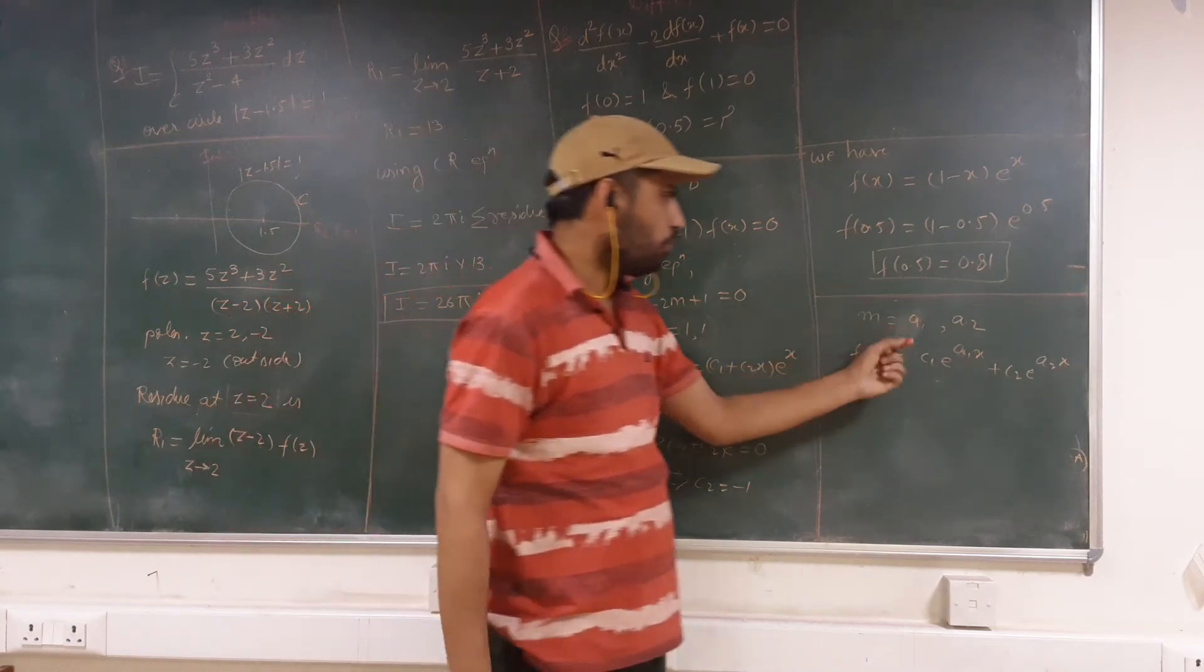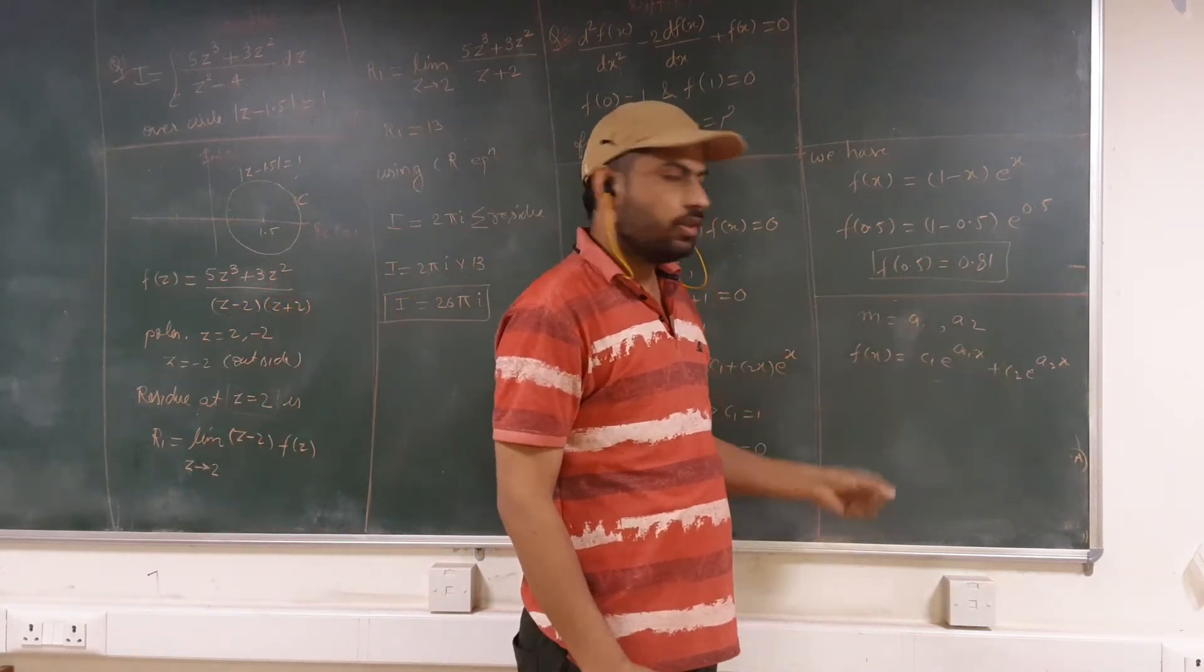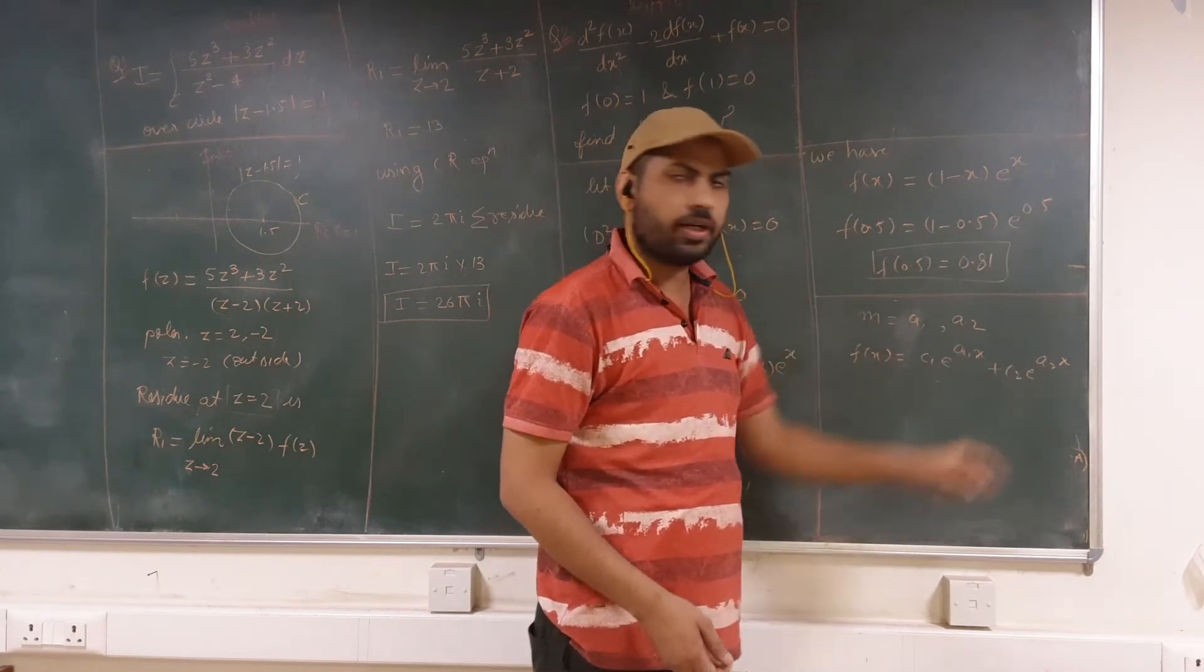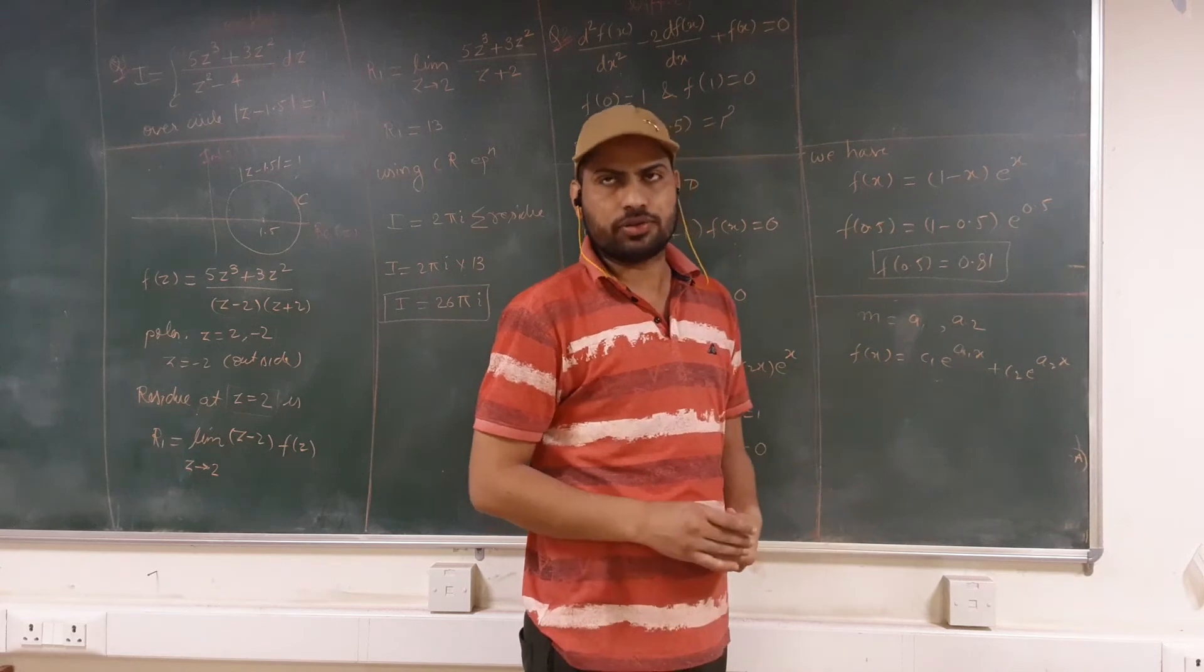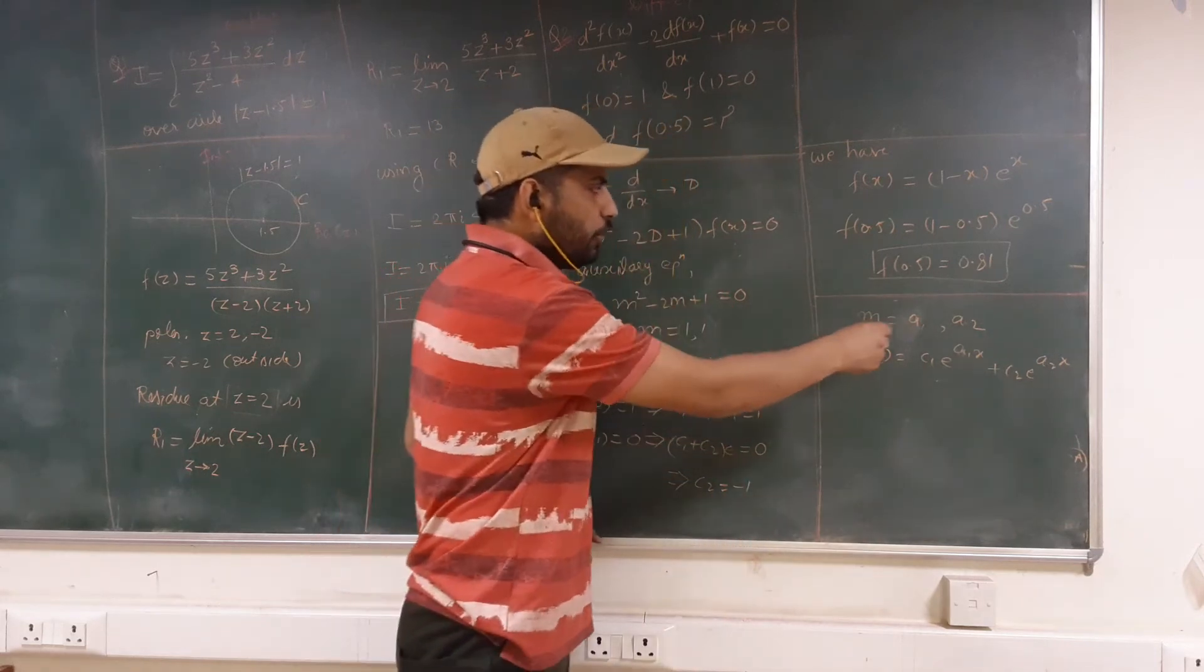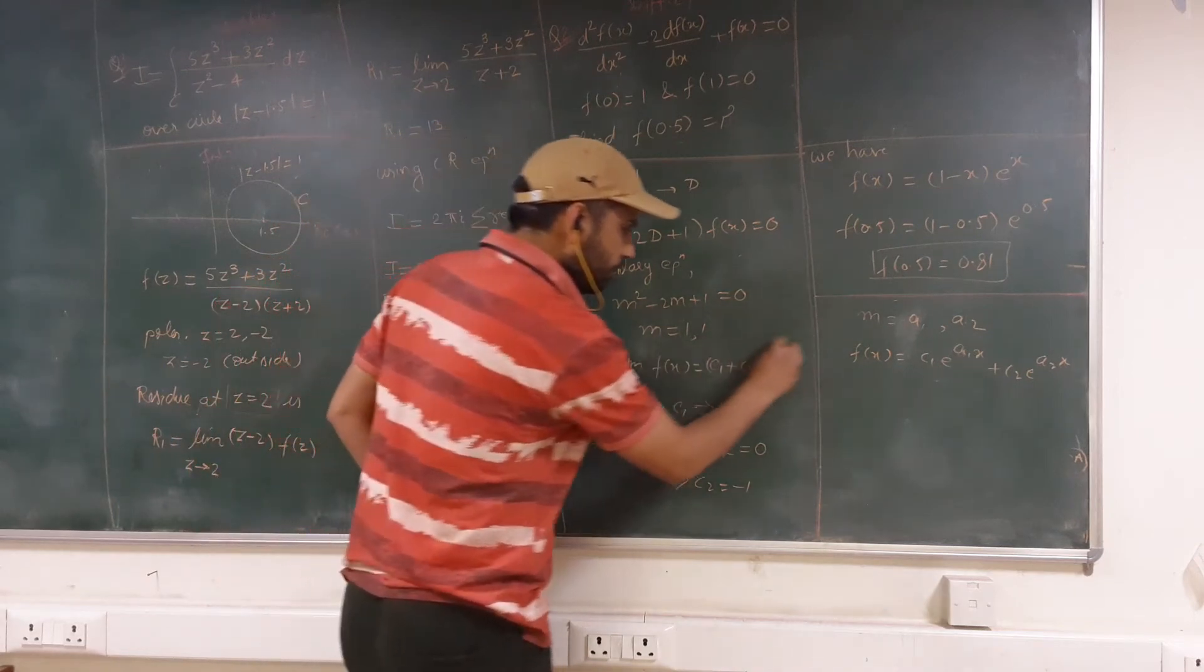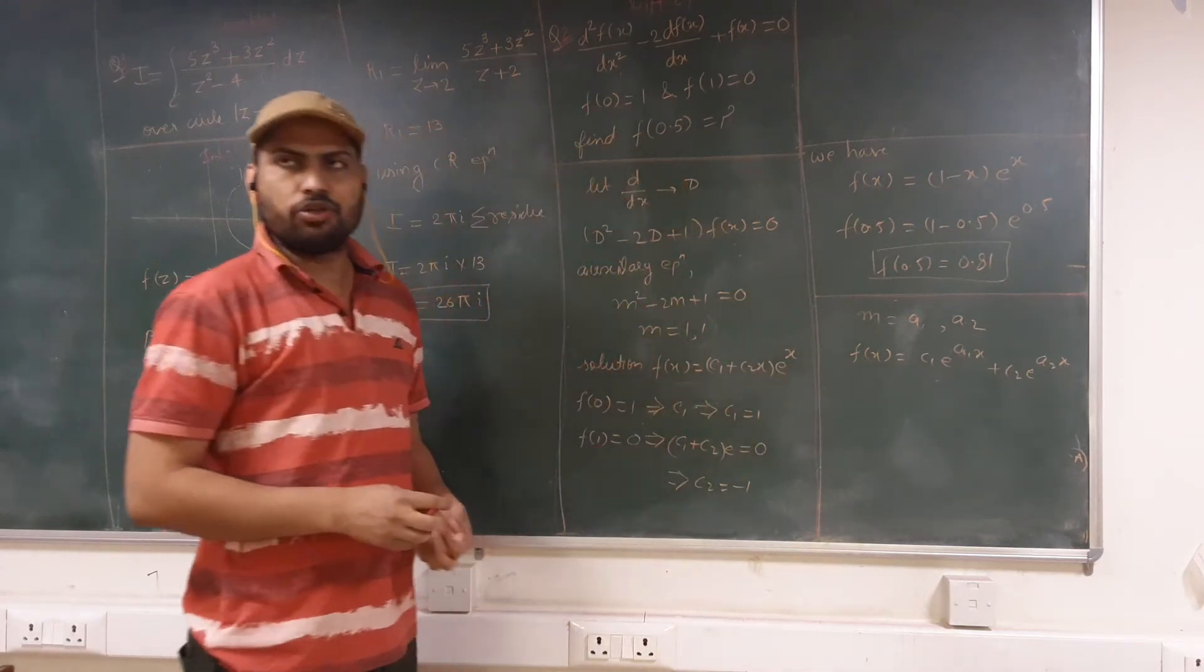If these roots are different, like suppose roots are a₁ and a₂, then the solution will be c₁e^(a₁x) + c₂e^(a₂x), where c₁ and c₂ are constants and a₁ and a₂ are the roots of this auxiliary equation. In this case, we get the function as f(x) = (c₁ + c₂x)e^x.